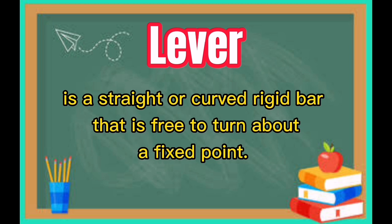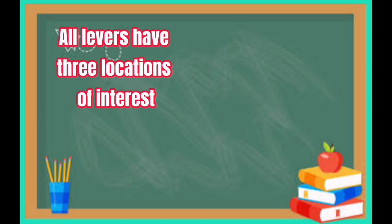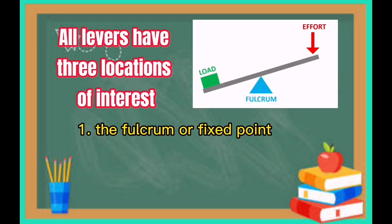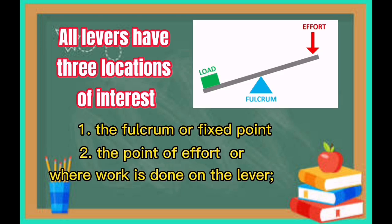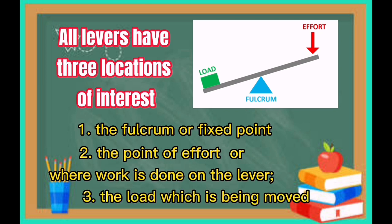Lever. It is a straight or curved rigid board that is free to turn about a fixed point. All levers have 3 locations of interest: the fulcrum or fixed point, the point of effort or where work is done on the lever, and the load which is being moved.